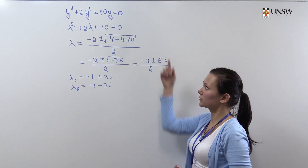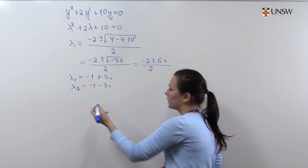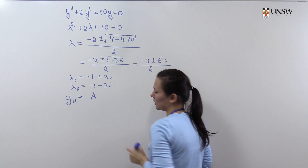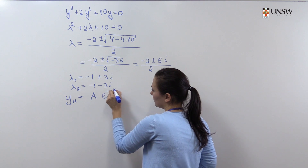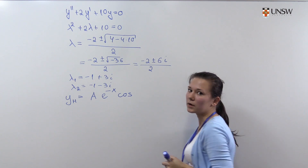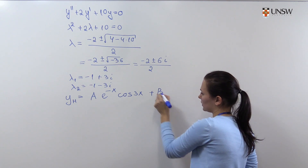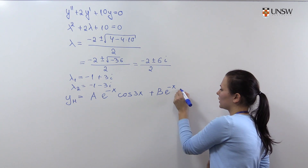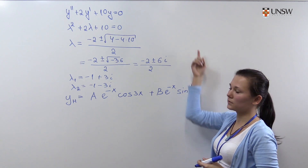We have solved the characteristic equation and can now write the general solution. The general solution for this homogeneous equation will be: constant a times e to the power of minus x times cosine of 3x, plus constant b times e to the power of minus x times sine of 3x. This is the general solution of the given differential equation.